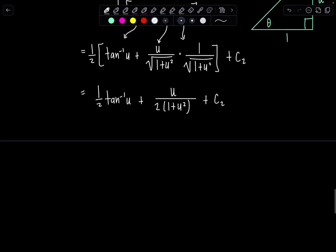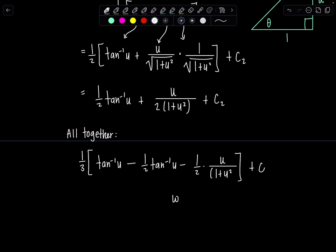Now let's put it all together. All together. Remember, we have that one third out front, and I promised I wouldn't forget. Okay, I'm not forgetting it. One third times the first integral gave us tan inverse of u. And then we have minus this result. So minus one half tan inverse of u minus one half u over one plus u squared. And then now I'll say plus c, where c is who? Well, my c1 would have been here, minus c2, all times a third. So I'll say c is one third times c1 minus c2.